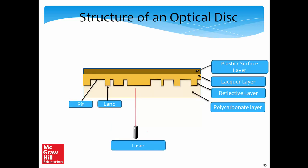The structure of an optical disk is a four-layer structure. We have a laser that shines light on the disk as it rotates. There is a polycarbonate layer at the bottom which essentially protects one side of the recording surface. Light passes through the polycarbonate layer — it is pretty much transparent to light. After that, we have what is called a reflective layer, which has certain structures on it.